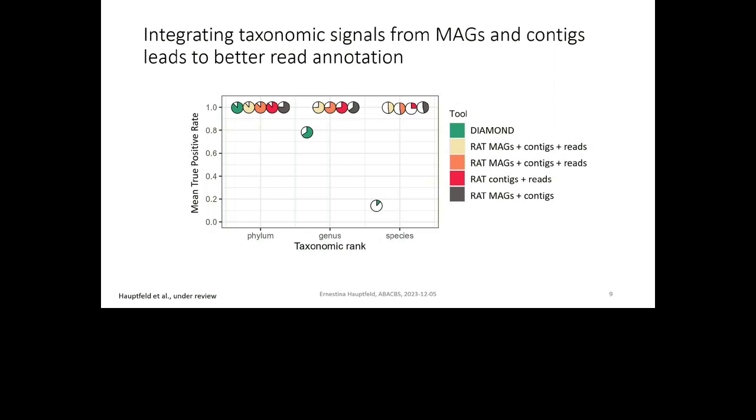And that's if the reads even get an annotation. And then if you integrate even just contigs into these annotations, then you can actually annotate a larger fraction of the data and then correctly. And then here in yellow and orange, you have all the information integrated. So MAGs, contigs, and reads. I just binned them two different ways. This is not important for right now. Then you can annotate an even larger fraction of the data and more correctly. And then what we also see is that if we ignore the reads and just annotate based on MAGs and contigs, then we will usually annotate a smaller fraction of the data. However, it will have a very high true positive rate.